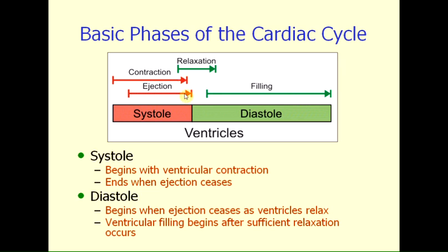Towards the end of the phase of contraction and ejection and near the end of systole, some of these muscles will actually undergo relaxation and begin to lose their ability to generate force. Once ejection ceases, we then enter into the second general phase of the cardiac cycle — the longer of the two phases at normal heart rates — called diastole. Diastole is initiated with relaxation, and once the ventricles relax sufficiently, they will then begin to fill with blood from the atrial chambers.